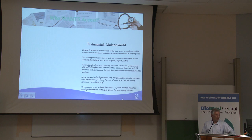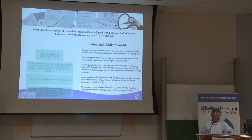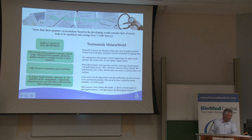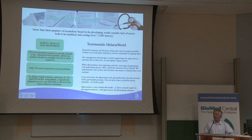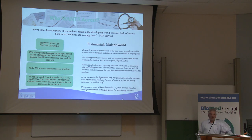Who needs open access? Why do we need it? More than three quarters of researchers based in the developing world think that not having access to information is unethical. The survey results in brief: 95% of respondents agreed that articles on malaria should be available free, and only 2% never had any problems with access — including technical problems in Africa and other developing areas. In Africa, South America, and Asia, 40%, 80%, and 90% respectively claimed never to use HINARI, or did not even know it exists. That is another remarkable outcome of this survey.